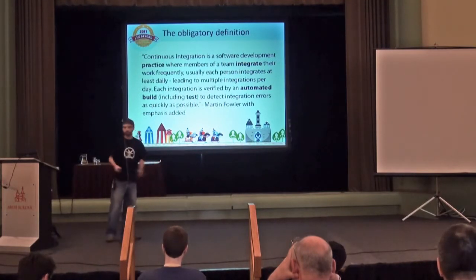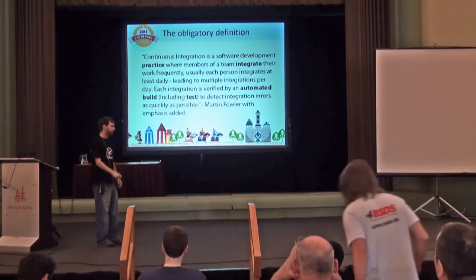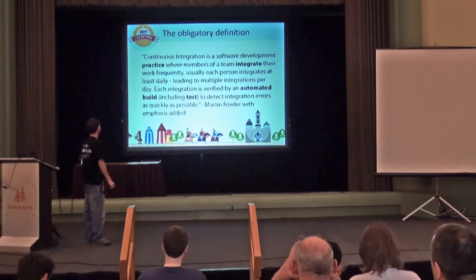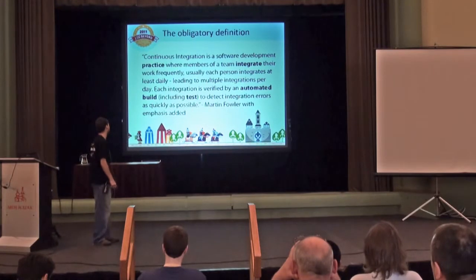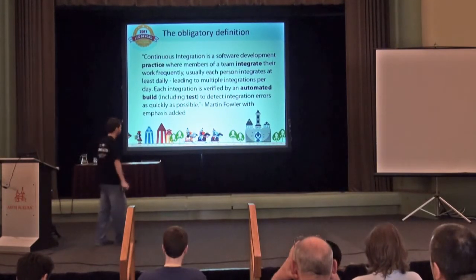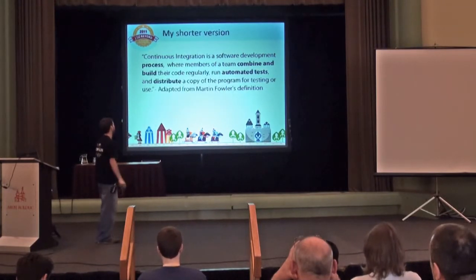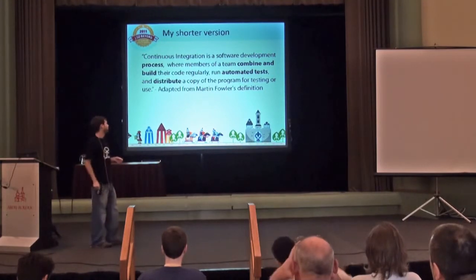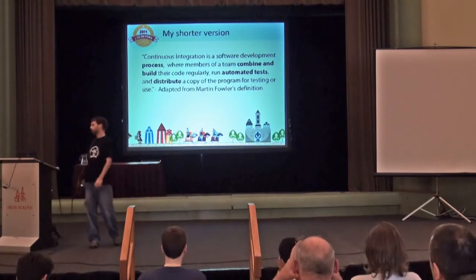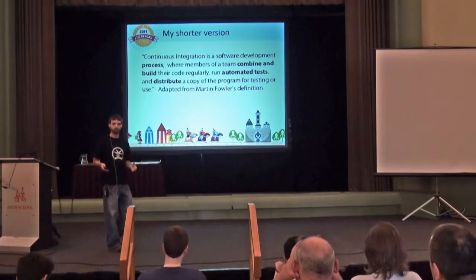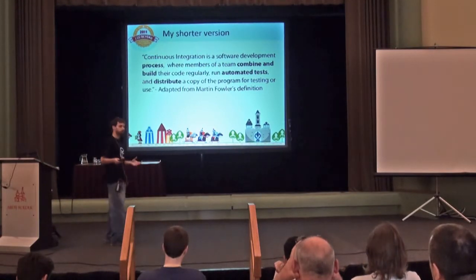This is the definition I pulled from Martin Fowler, one of the leading people on this topic. Continuous integration is a software development practice where members of a team integrate their work frequently, usually each person integrates at least daily, leading to multiple integrations per day. Each integration is verified by an automated build, including tests, to detect integration errors as quickly as possible. In short: it's a process where members of a team combine and build their code regularly, run automated tests, and distribute a copy of the program for testing or use.